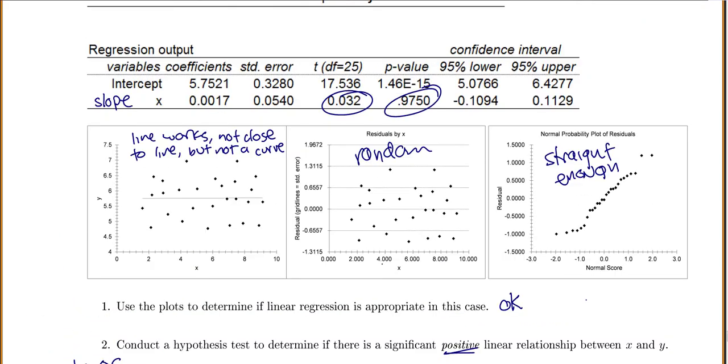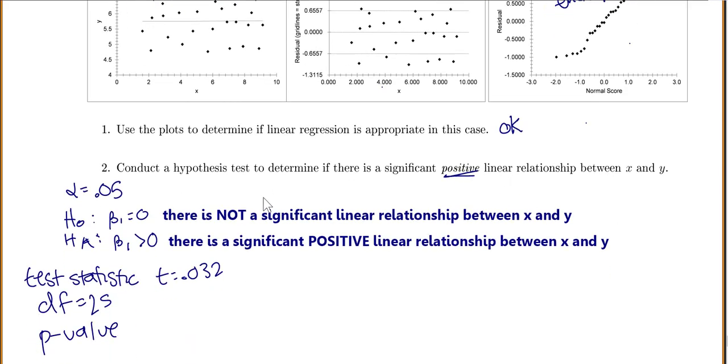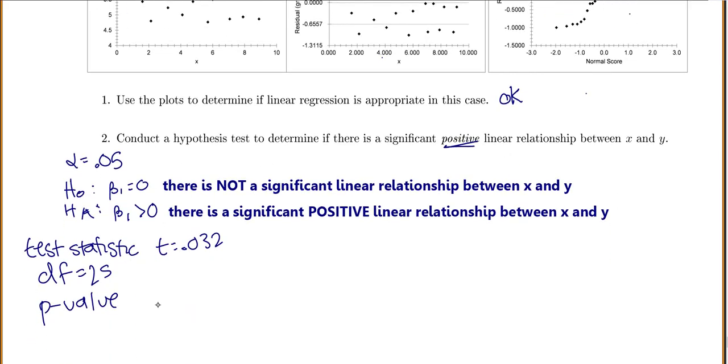Although, remember, Megastat always does a two-tailed p-value. We have an alternative hypothesis for greater, so we only want the right tail. So we'll do the 0.975 divided by 2, which is 0.4875. So my p-value equals 0.4875.